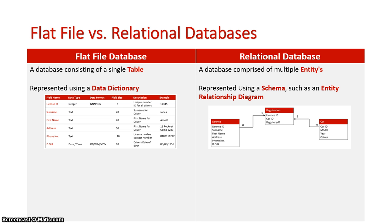The ERD basically lists the entities and its attributes — the attributes are usually the fields that would be in the table — and then the relationships between each entity: one to one, one to many, many to many.